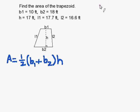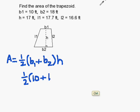Okay, so now that we have our equation, we can simply substitute in our values. We get one-half of 10 and 18 times the height.